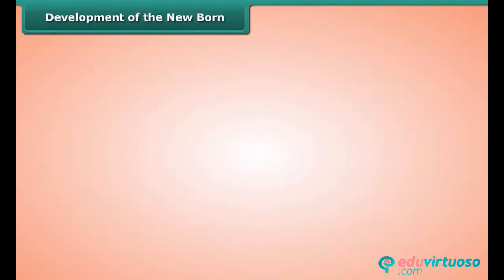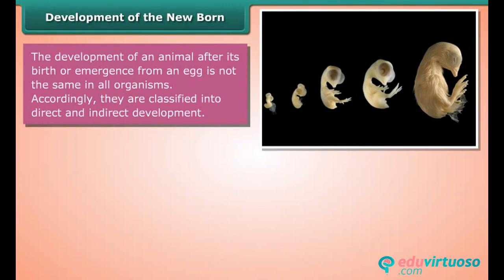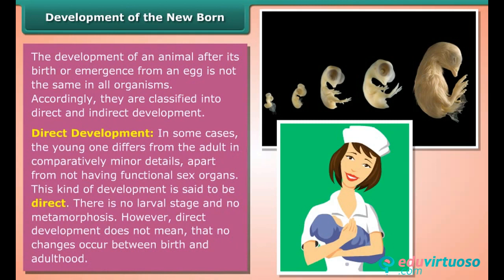The development of an animal after its birth or emergence from an egg is not the same in all organisms. Accordingly, they are classified into direct and indirect development. In direct development, the young one differs from the adult in comparatively minor details, apart from not having functional organs. There is no larval stage and no metamorphosis. However, direct development does not mean that no changes occur between birth and adulthood. Human beings are typical examples of this kind of development.